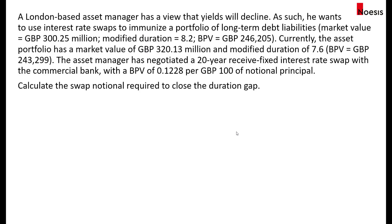Let's look at this example. We have a London-based asset manager who has a view that yields will decline, so asset values will increase and liability values will also increase. He wants to use interest rate swaps to immunize a portfolio of long-term debt liabilities where the market value is 300.25 million pounds, the modified duration is 8.2, with a basis point value of 246,205 pounds. Currently the asset portfolio has a market value of 320.13 million pounds and modified duration of 7.6, so the basis point value for the asset portfolio is 243,299 pounds.